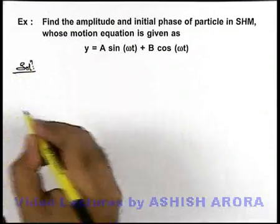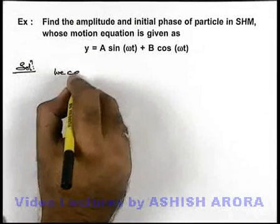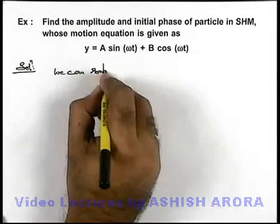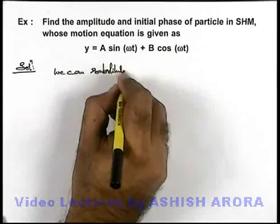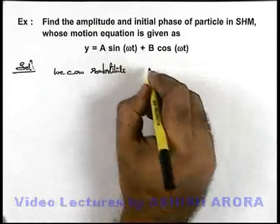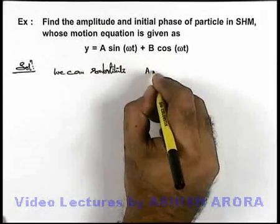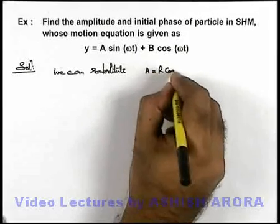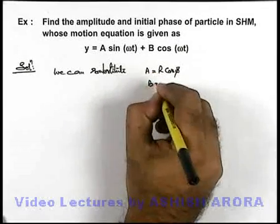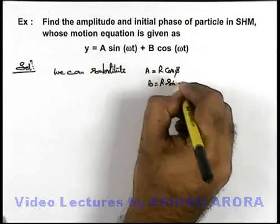In this situation, we can substitute A as R cos φ and B can be substituted as R sin φ.